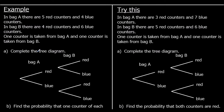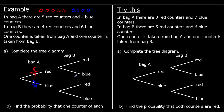So for bag A, the first pick is going to be bag A and there are five red and four blue. So if there are five red counters and four blue counters, what's the probability of getting a red? The probability is five out of nine. Five out of nine counters are red and the probability of getting a blue is going to be four ninths. Four out of nine are blue. So that's bag A.